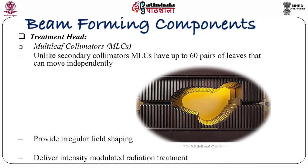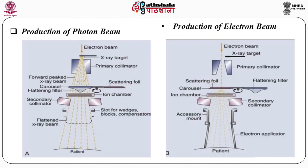The treatment head also contains multi-leaf collimators (MLCs), which is a very advanced feature over the cobalt machine. Unlike secondary collimators, MLCs have up to 60 pairs of leaves that can move independently and provide irregular field shaping. With the help of this, we can modify the intensity of the output of the linac, delivering Intensity Modulated Radiation Treatment (IMRT). This image shows how the electrons are coming out from the linac and falling on the flattening filter or the scattering filter, and then falling on the patient surface. Each and every part is self-defining.